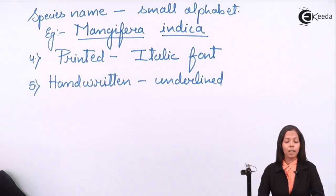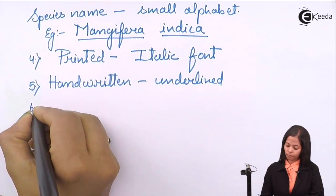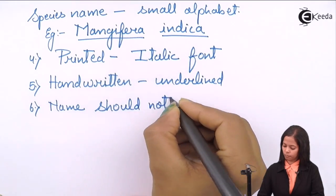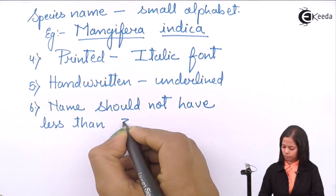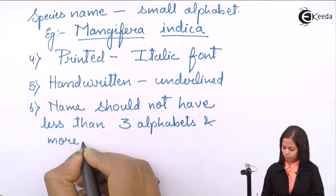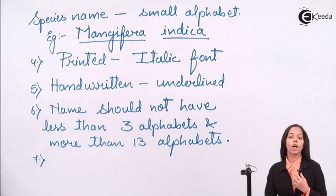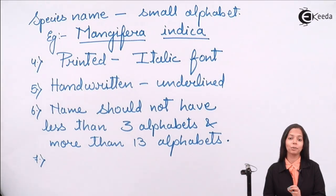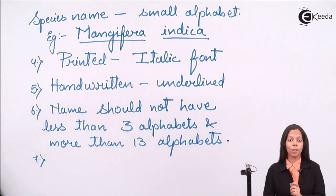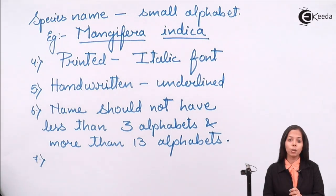The next rule is that the name should not have less than three alphabets or more than thirteen alphabets. The following rule states that species belonging to the same genus cannot have the same name, but species belonging to different genera may have the same name.